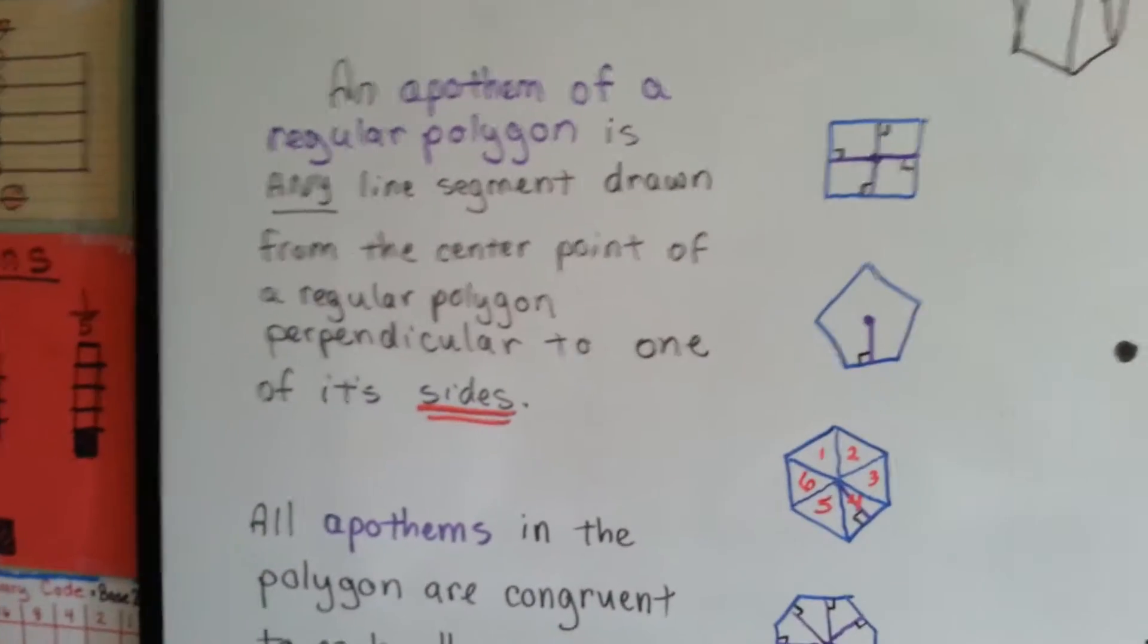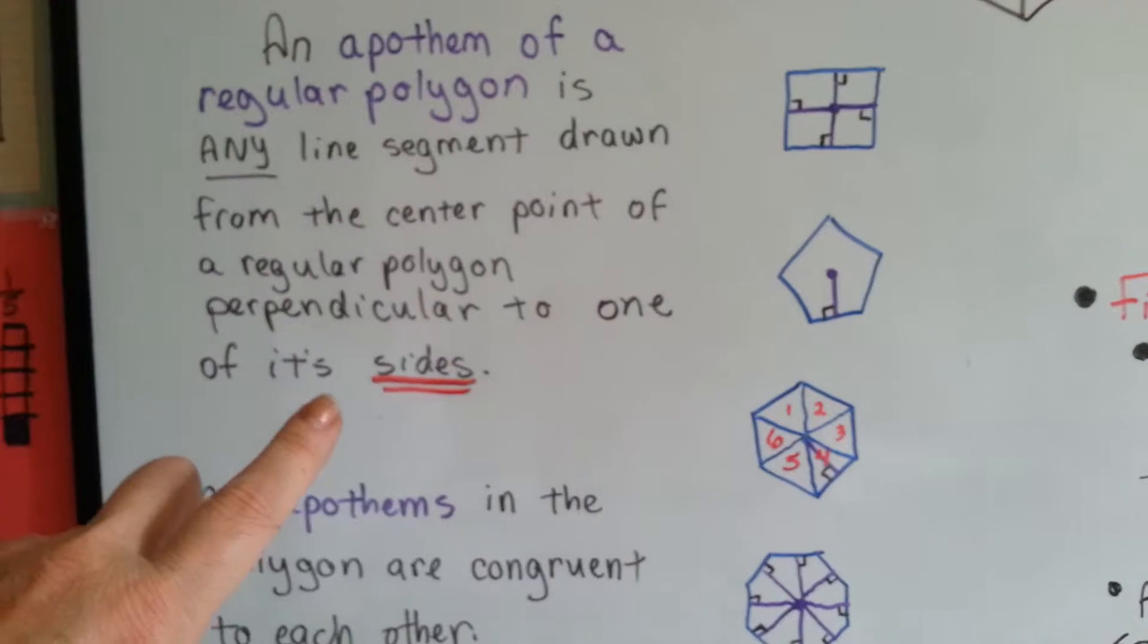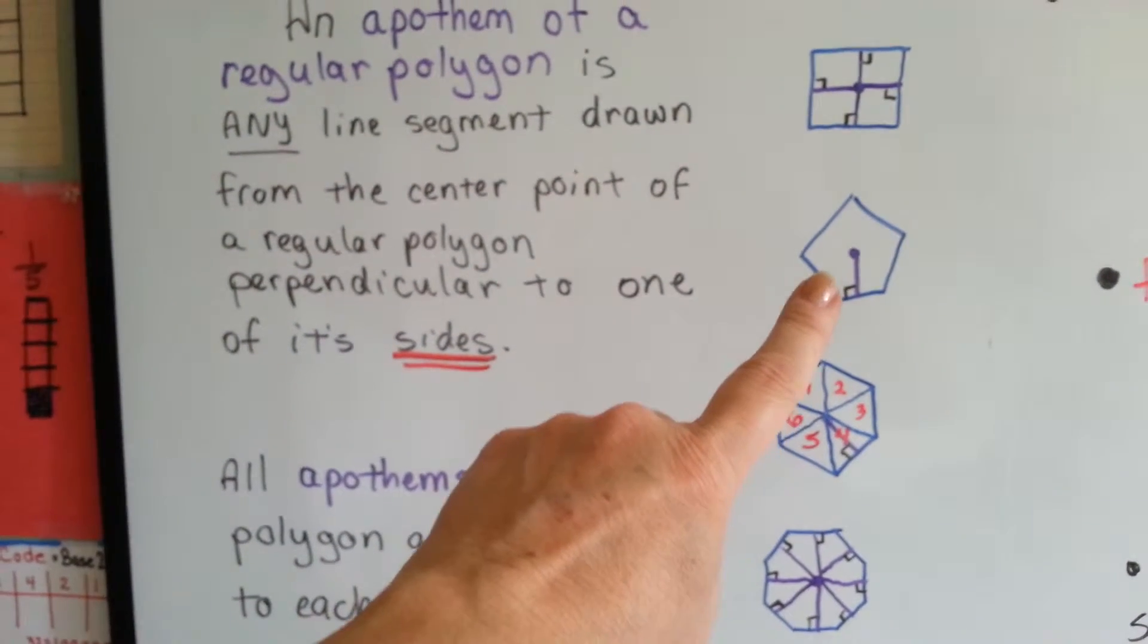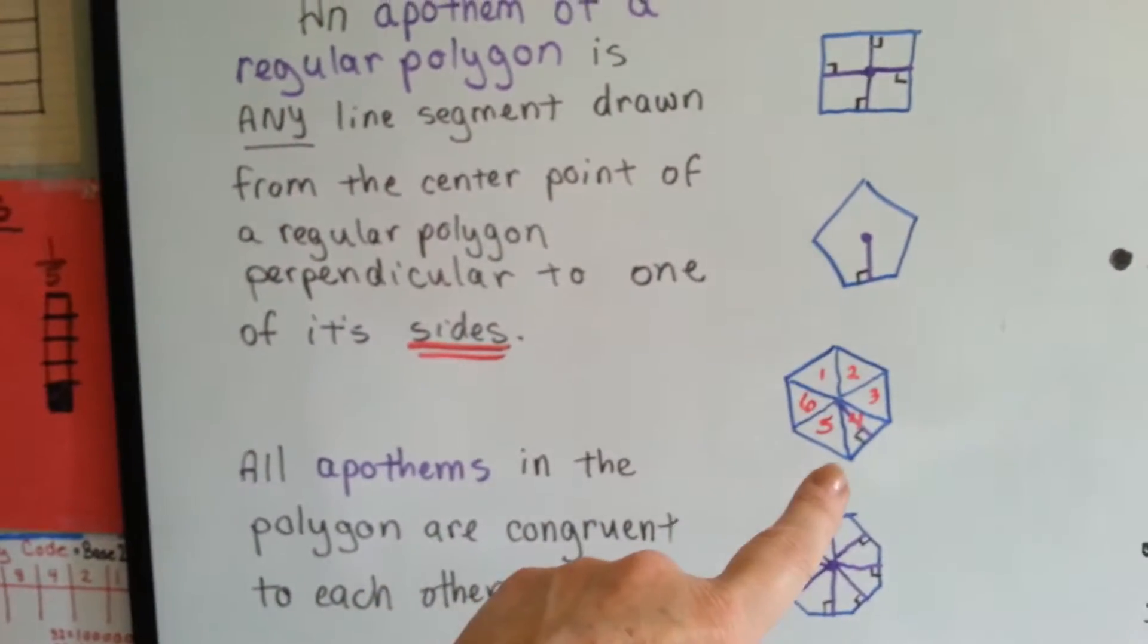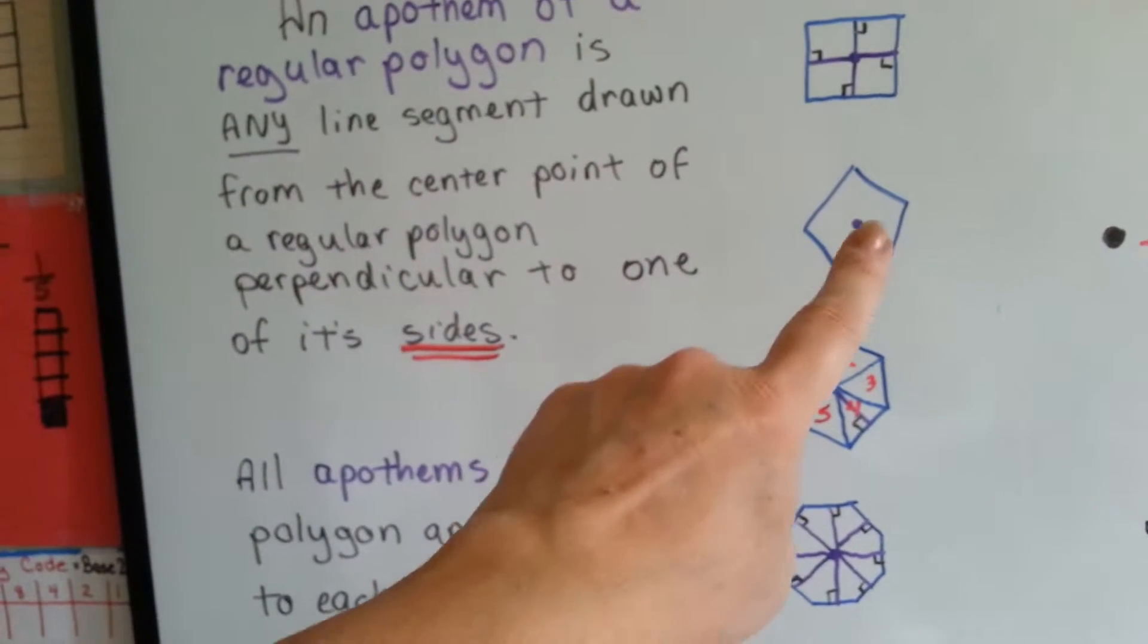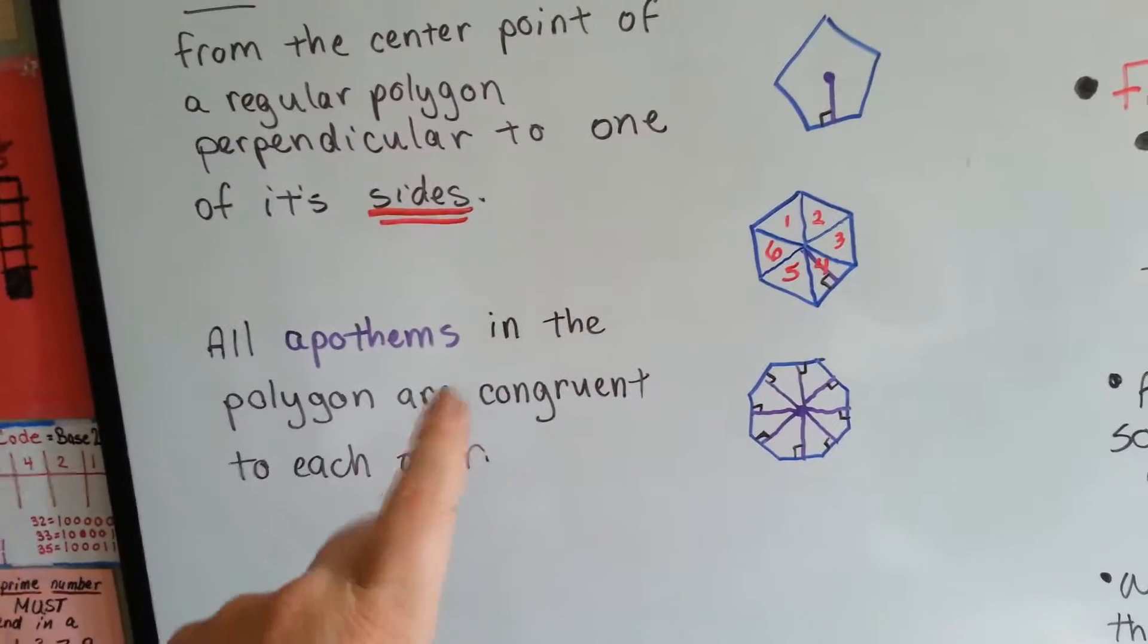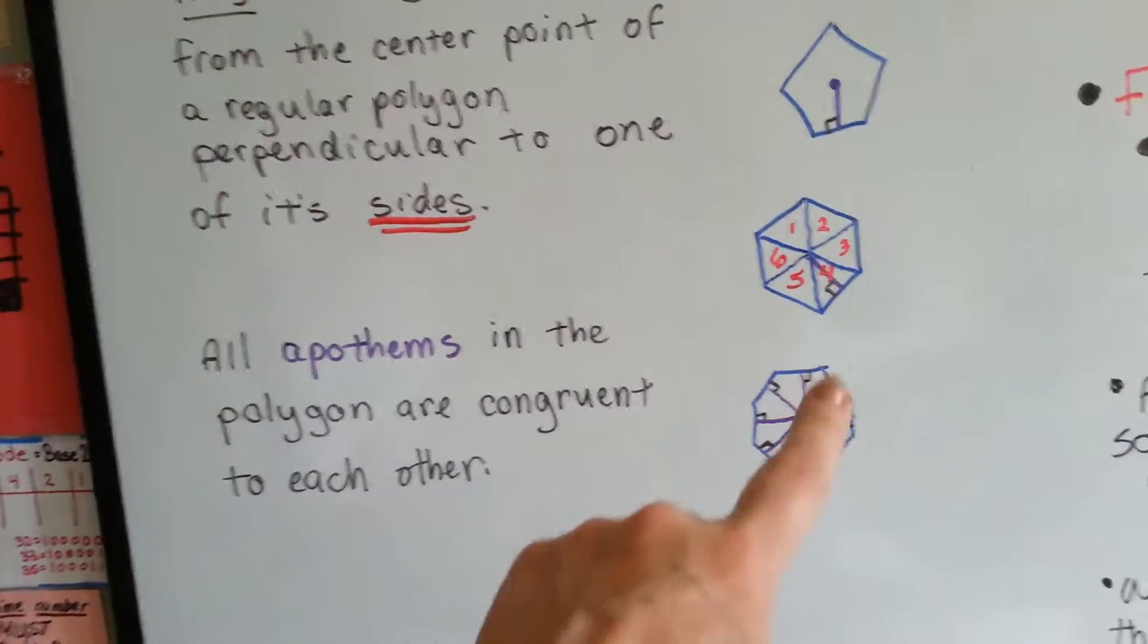For those of you that don't know, an apothem of a regular polygon is any line segment drawn from the center point of a regular polygon perpendicular to one of its sides. Not to a vertex, to a side, because if it went to a vertex it wouldn't be perpendicular. They're all congruent to each other.